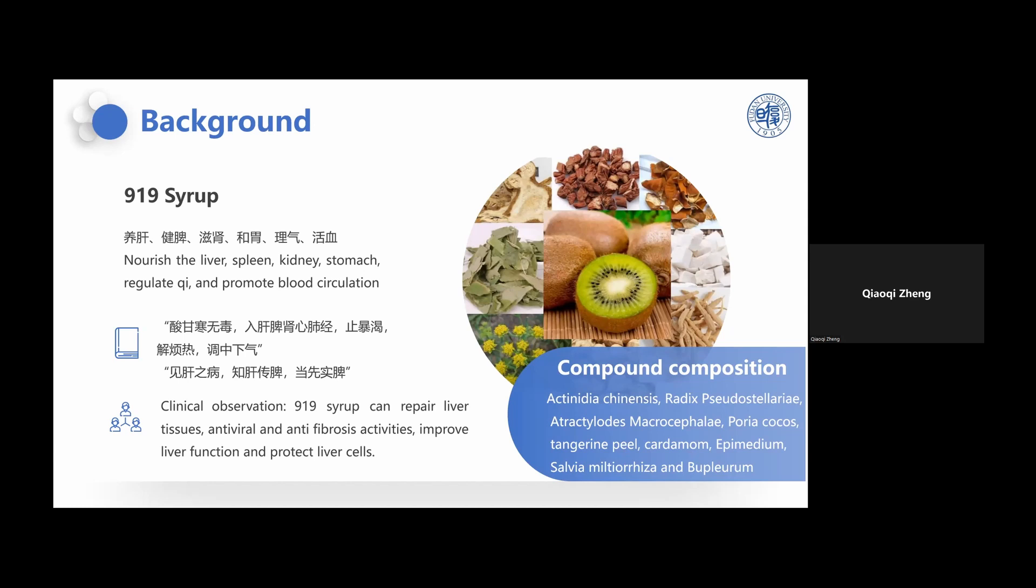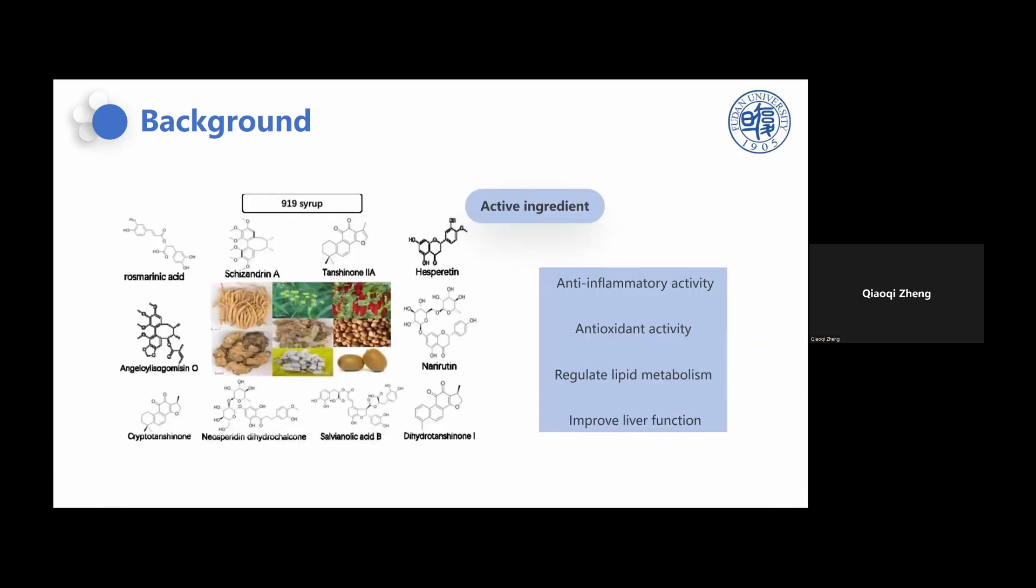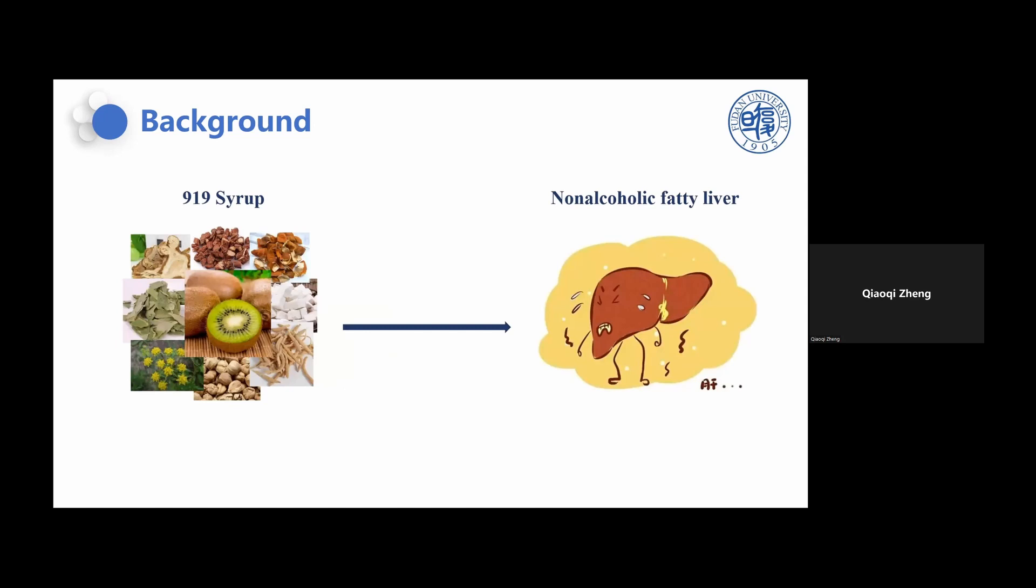In previous studies, our team analyzed active ingredients of 919 by HPLC-MS and found these 10 major chemical substances. In further inquiry, we found that this compound showed anti-inflammatory and anti-oxidant effects. It can reduce ROS production, inhibit the NF-κB pathway, the expression of adhesion molecules, the production of pro-inflammatory cytokines, and lipid peroxidation.